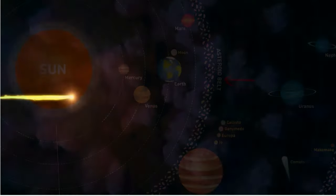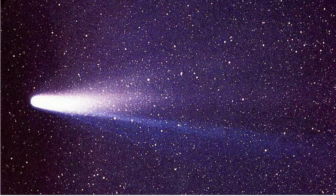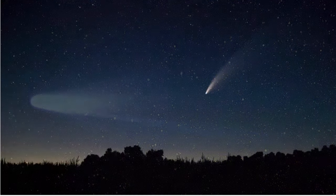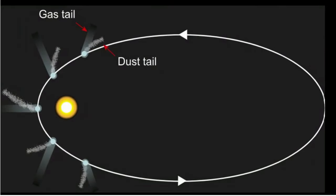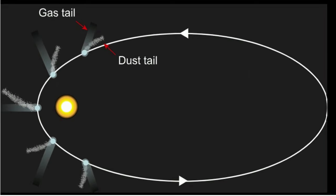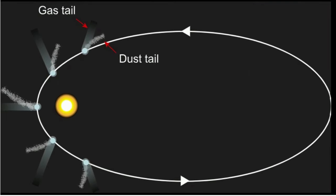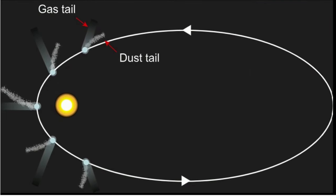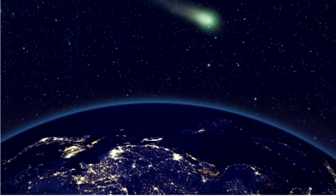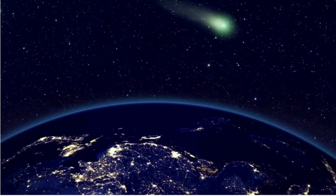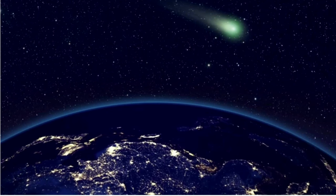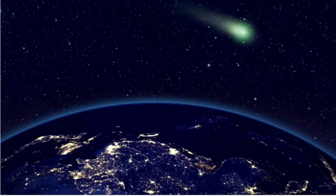A comet is an object made of frozen ice, gas, and dust that orbits the Sun. They are classified as a small solar system body. Many comets have a very elliptical orbit, and as the comet gets closer to the Sun, it heats up and forms a glowing tail. As of 2021, there are 4,584 identified comets, and roughly one comet is visible without a telescope per year.